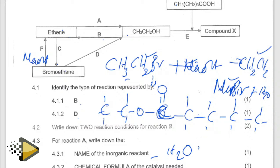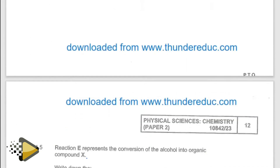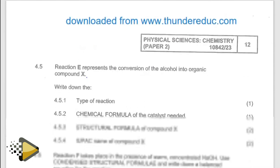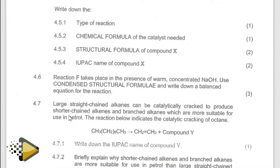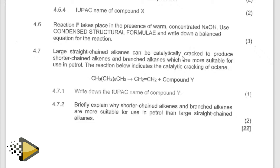Then the next question — question 3.7. It says that large straight chain alkanes can be catalytically cracked to produce short chains — we call it cracking. Alkanes and then branched alkanes, which are more suitable for use in petrol. The reaction below indicates the catalytic cracking of octane. Octane is 8. When you do 8, you break it into small pieces. Write down the IUPAC name of Y.